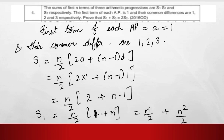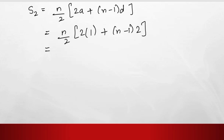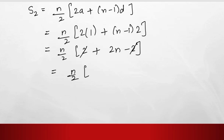Next we find S2. S2 equals n upon 2 times (2A plus n minus 1 into D). Putting A equals 1 and D equals 2, we get n upon 2 times (2 plus 2n minus 2). The 2 and minus 2 cancel, leaving n upon 2 times 2n. The 2 cancels, so S2 equals n squared.